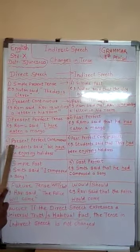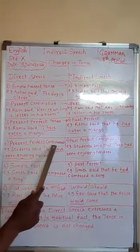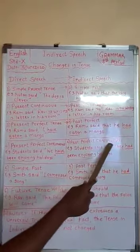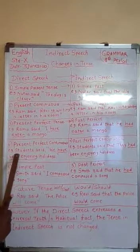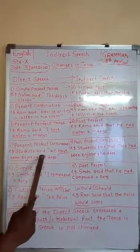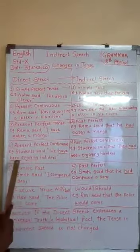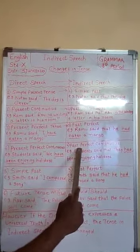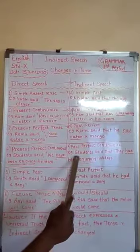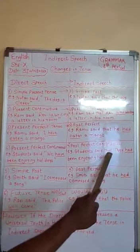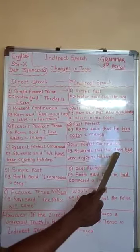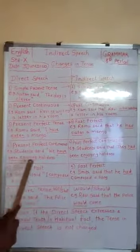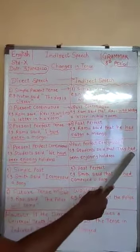The fourth tense: present perfect continuous tense changes into past perfect continuous tense. For example: Students said, 'We have been enjoying holidays.' Let's see the change to past perfect continuous tense: Students said that they had been enjoying holidays. So 'have been enjoying' becomes 'had been enjoying.'